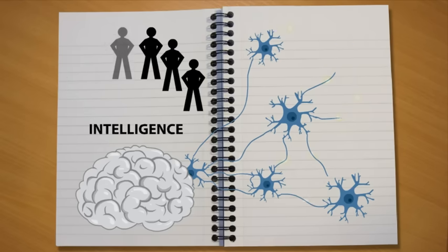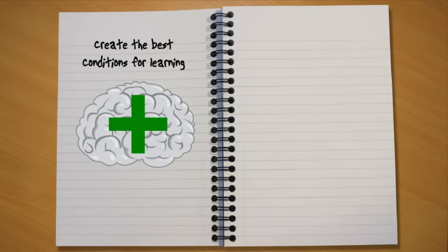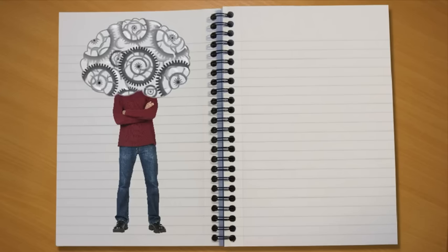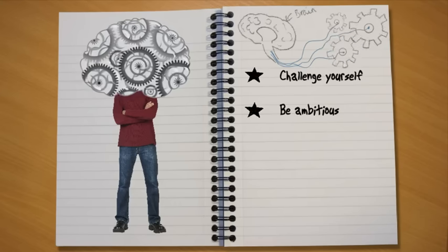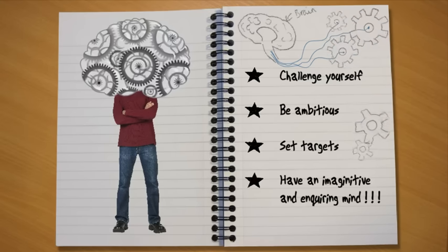There's lots you can do to make sure that your brain is healthy by creating the best conditions for learning. Firstly, the more you use your brain, the more efficient it will become. Challenge yourself in your learning, be ambitious, set targets for yourself and make sure that you have an imaginative and an inquiring mind.